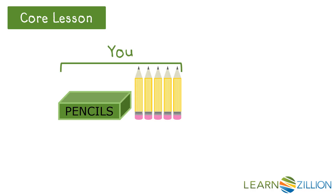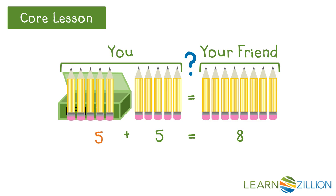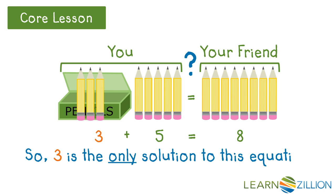So let's move into our lesson. Imagine that you have a pencil box and 5 pencils, and your friend has 8 pencils. How many pencils must be inside the box in order for you and your friend to have the same amount? We could represent this with an equation. To solve this, we might substitute in values for x, or put pencils in the pencil box and see what works. Let's try 5. Right away you can see that you have more pencils than your friend, so 5 is not the solution. We might try a smaller number. If you put 3 pencils in the pencil box, you can see that you and your friend have the same number of pencils. 3 plus 5 equals 8.